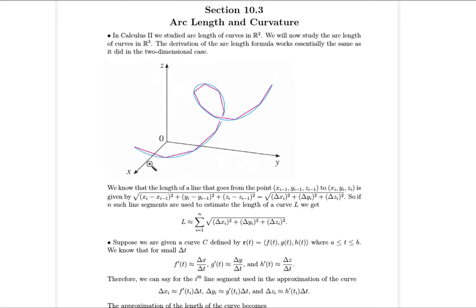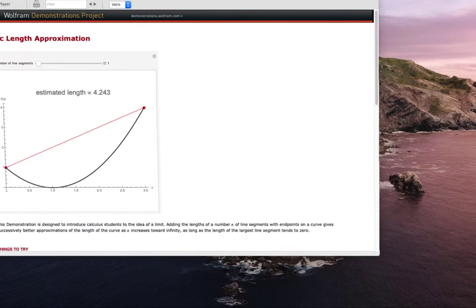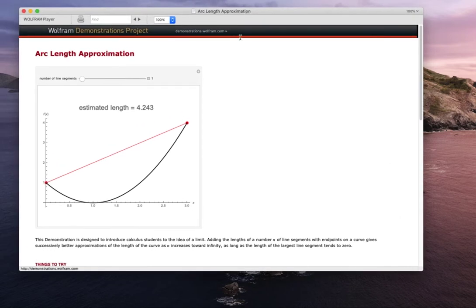When it comes to looking at arc length we are basically going to do what's in this picture here — if the blue curve there is the curve itself, then we're going to approximate the arc length by making a whole bunch of little line segments. I'm going to pull up an illustration of this; it's just a Calc 2 type 2D illustration but it's the same exact principle.